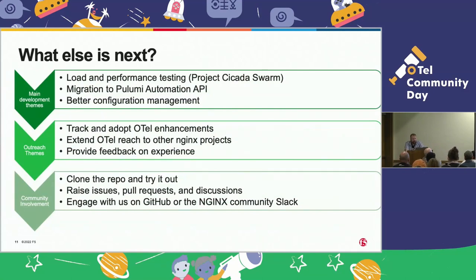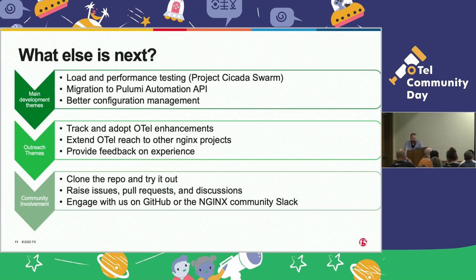So what's next? We're looking at adding some better load and performance testing. We have a project in the works called Cicada Swarm that will hopefully add another layer of testing with some pass-fail for CI pipelines. We're looking at migrating to the Pulumi automation API to get rid of the bash scripts that currently start things up and tear them down, and we're looking to have better configuration management. Of interest to this group, our goal is to track and adopt OTEL enhancements as they come along, extend OTEL to other products within the Nginx organization and greater F5 organization, and provide feedback on our experience through blog posts, conference talks, and things like that.